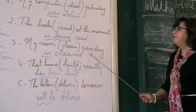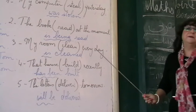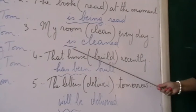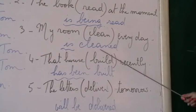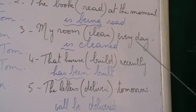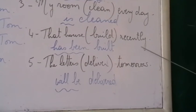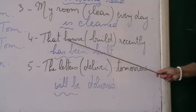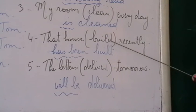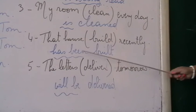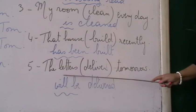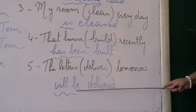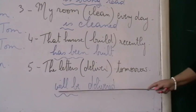Number three: 'My room is cleaned every day.' 'Every day' is a keyword for the present simple — it's a habit. The present simple of 'to be' for singular is 'is', so: my room is cleaned every day. Number four: 'That house has been built recently.' 'Recently' is a keyword for the present perfect, so 'to be' goes in the present perfect: that house has been built recently. Last example: 'The letters will be delivered tomorrow.' 'Tomorrow' is a keyword for the future: the letters will be delivered.